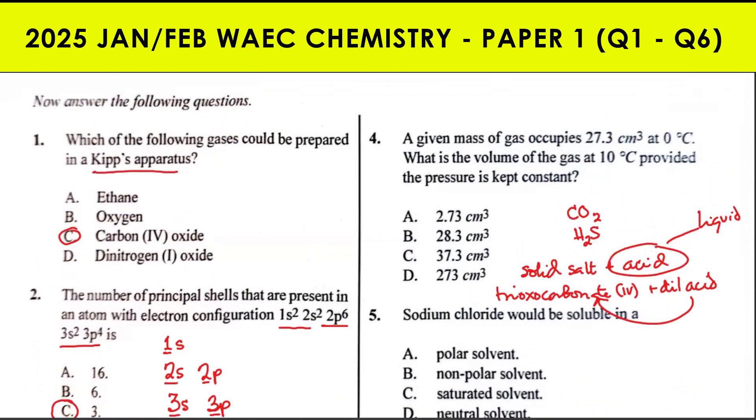Question 4: A given mass of gas occupies 27.3 cm³ at 0°C. What is the volume at 10°C provided the pressure is kept constant? Since pressure is constant, we apply Charles' Law, which states the volume of a fixed mass of gas is proportional to its absolute temperature in Kelvin at constant pressure. This means V₁/T₁ = V₂/T₂. Since we're looking for V₂, it implies V₂ = V₁T₂/T₁. Our temperature must be converted to Kelvin by adding 273.